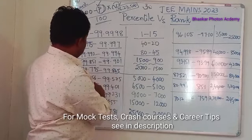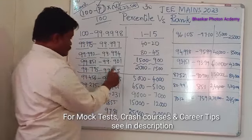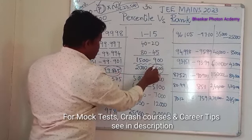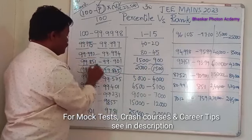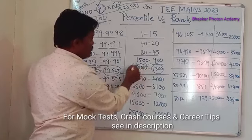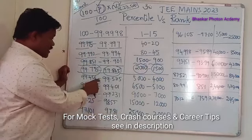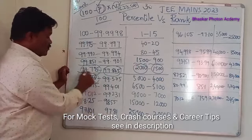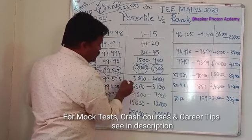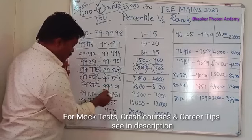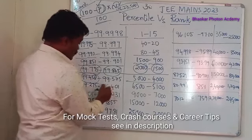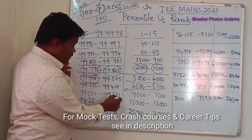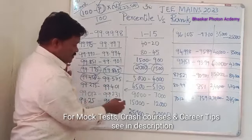So 99.845 being a higher score gives a rank around 1500, while 99.795 being a lower score gives a rank around 2000. For percentile 99.456 to 99.575, ranks are approximately 4000 to 5000. For percentile 99.275 to 99.401, ranks are around 5000 to 6500. For percentile 99.0 to 99.23, ranks are around 7000.